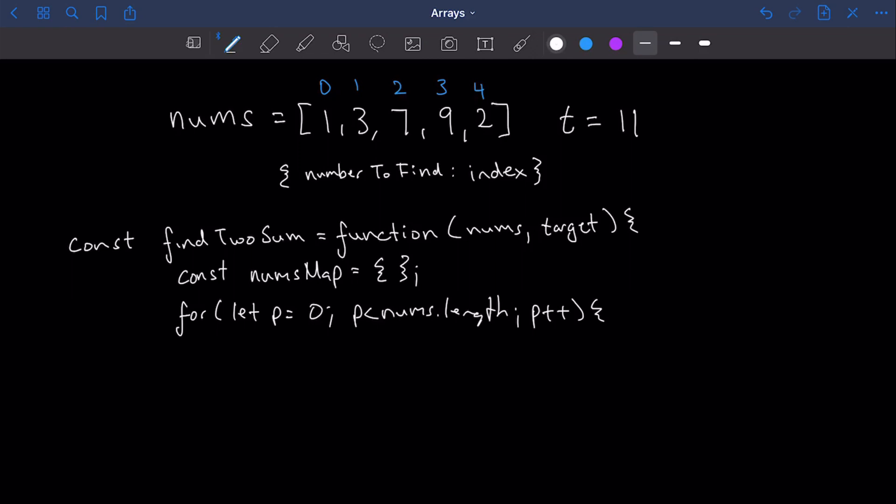That first task we have to do is check if the current number that p is at is equal to any number that we are looking for in our nums map so far. So I'm just going to set the value that we get back from the nums map into its own const, because we might use it more than once. So here I'm going to call it current map val equals nums map at nums at p.